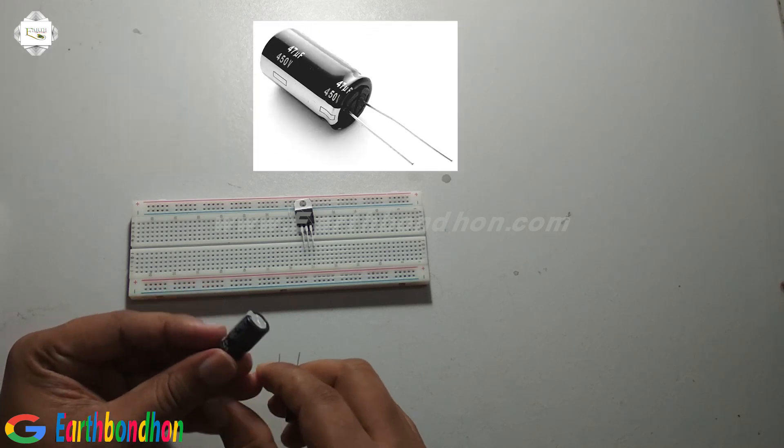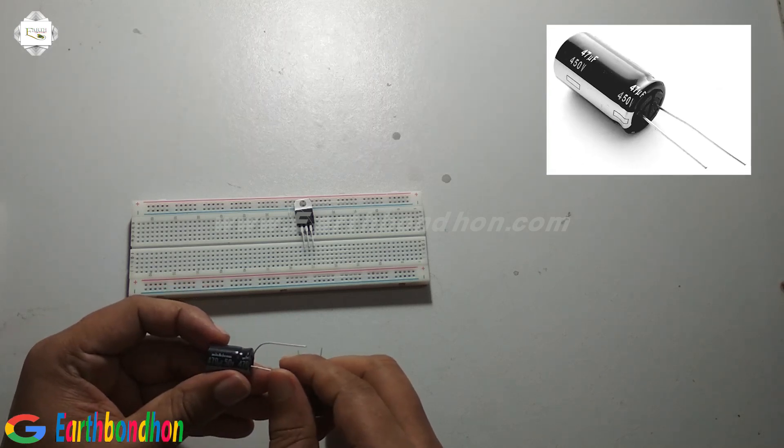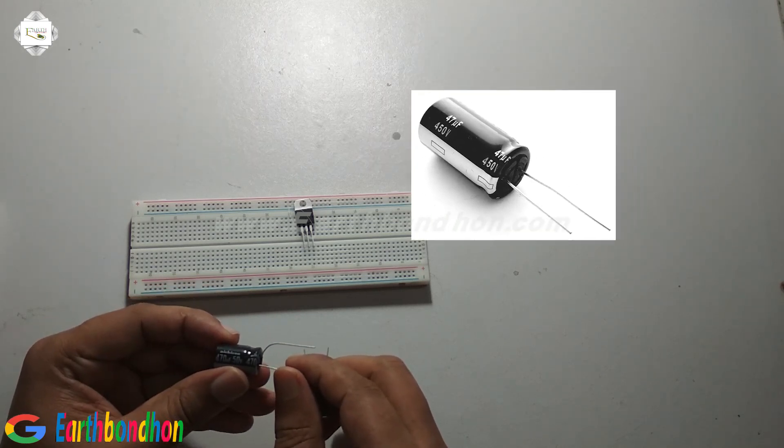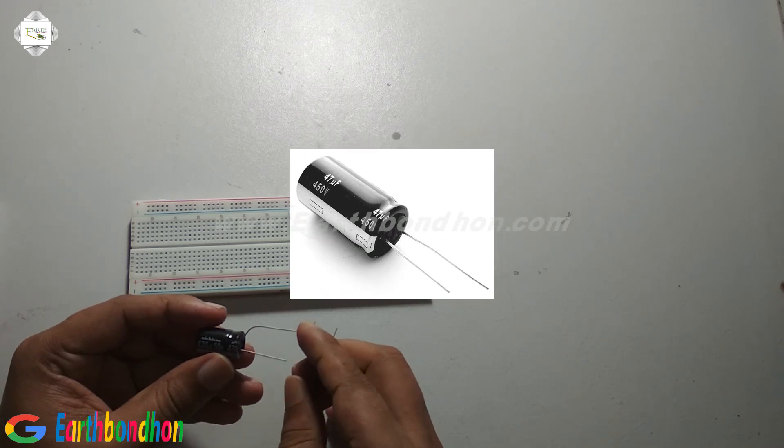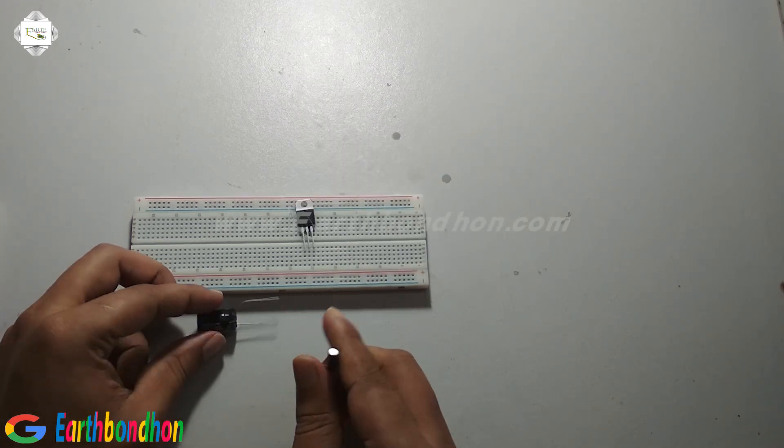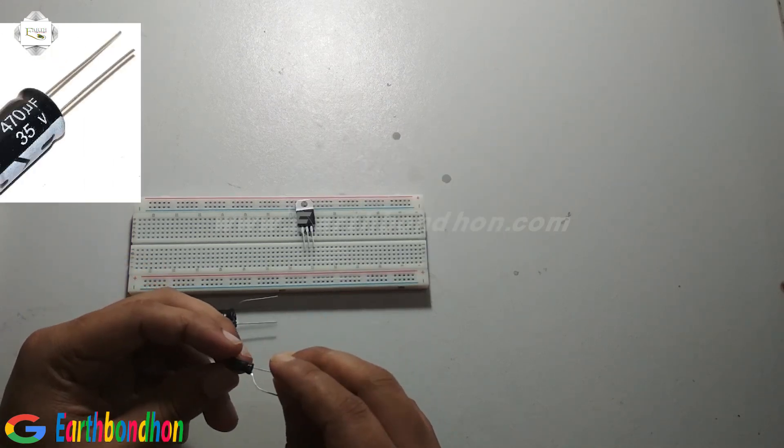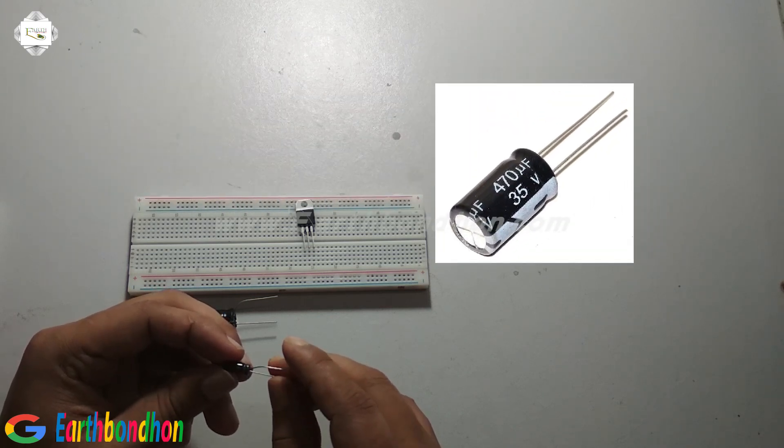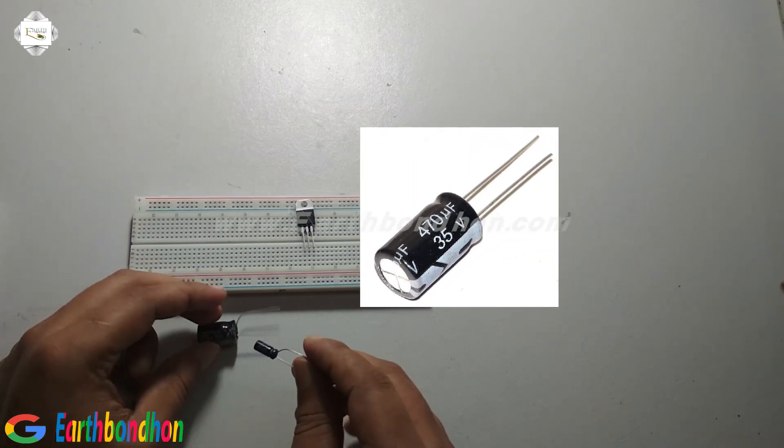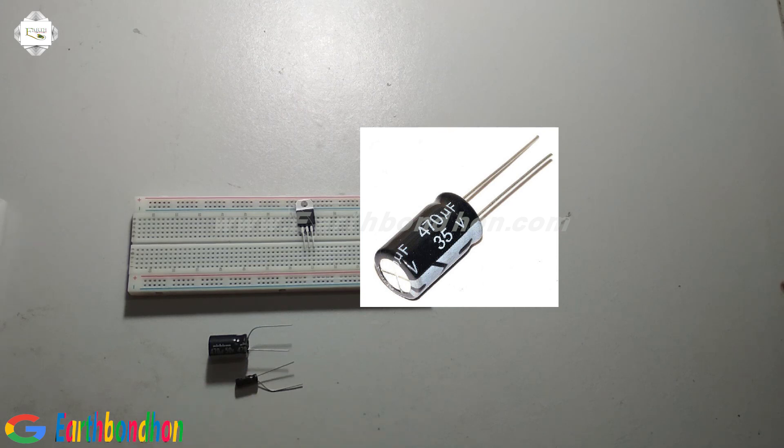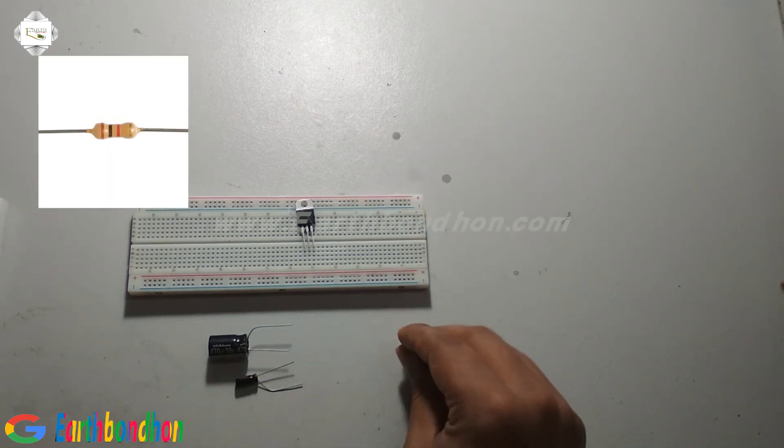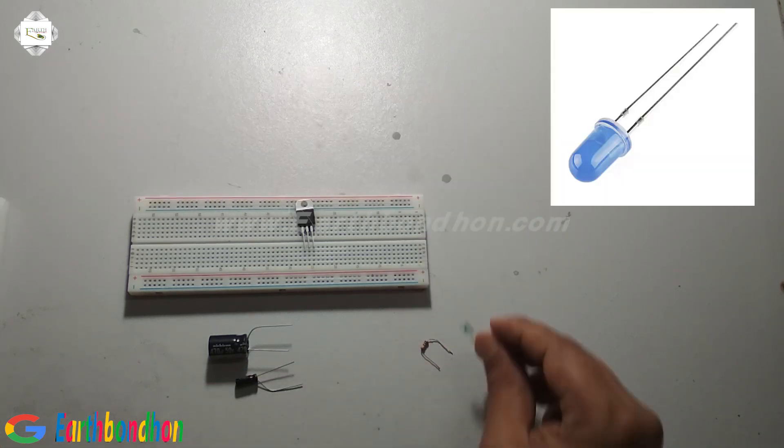This capacitor is 470 microfarad, 50 volt, and this capacitor is 47 microfarad, 25 volt. Also needed are a resistor, 1K ohm, and an LED.